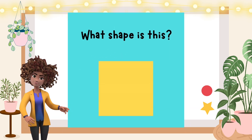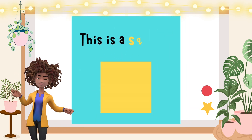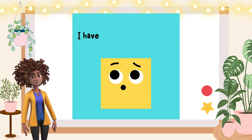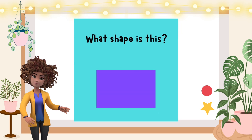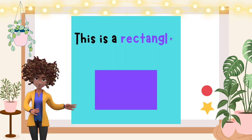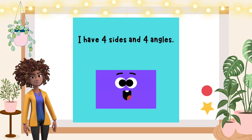What shape is this? This is a square. I have four sides and four angles. What shape is this? This is a rectangle. I have four sides and four angles.